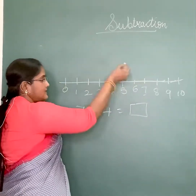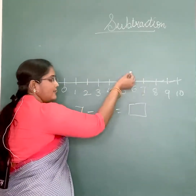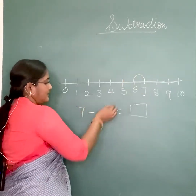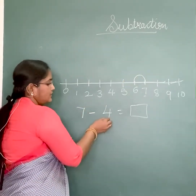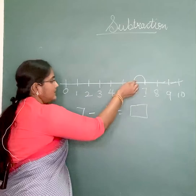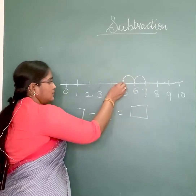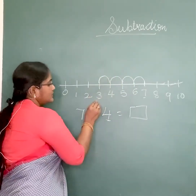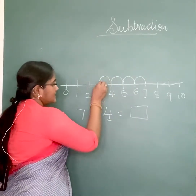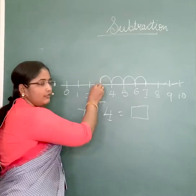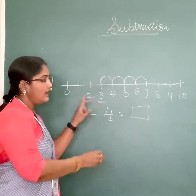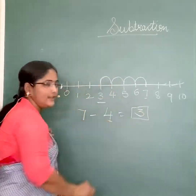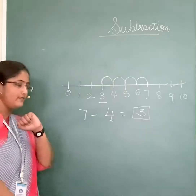Going backwards, taking steps back: 1, 2, 3, 4. So we stop on the number 3, and the answer is 3. Similar to this first example that we solved on the number line.